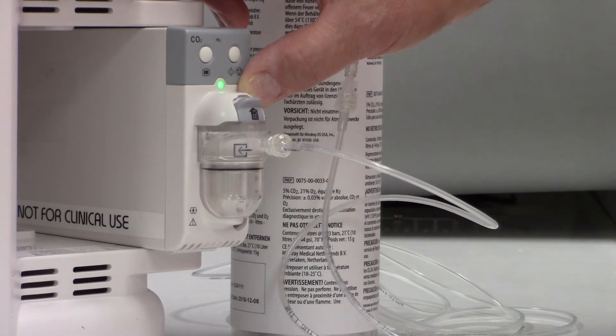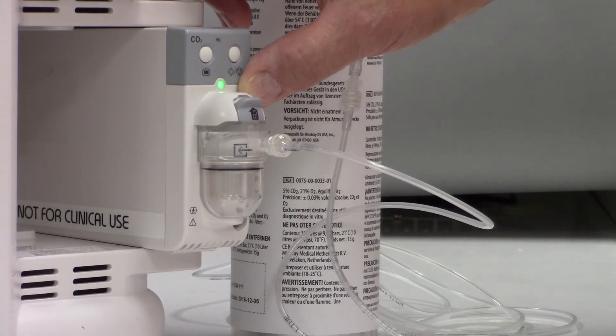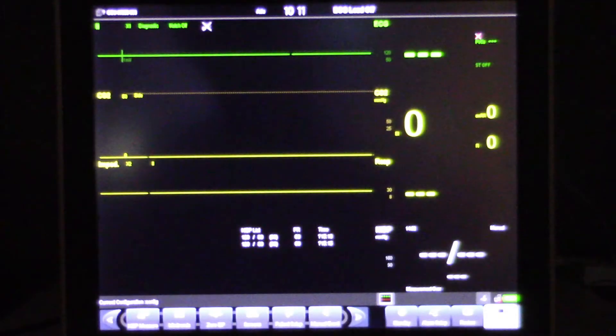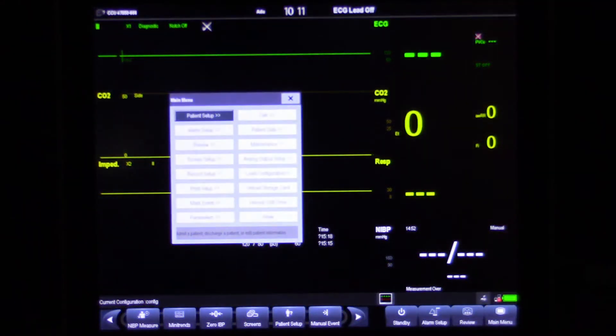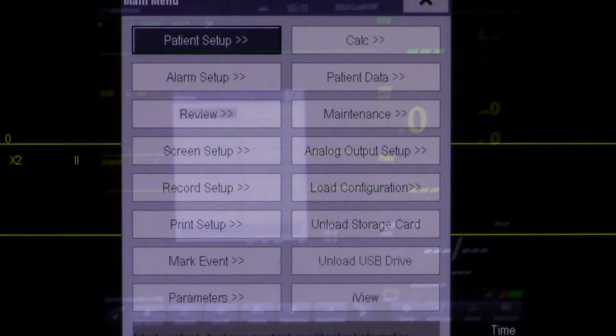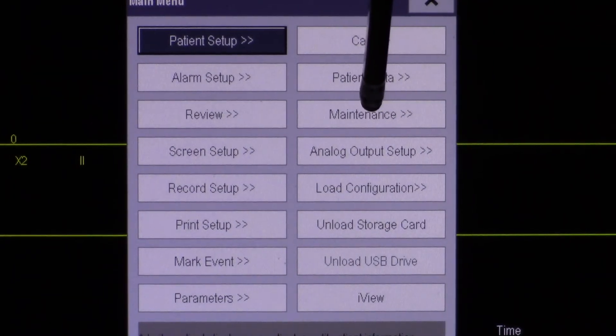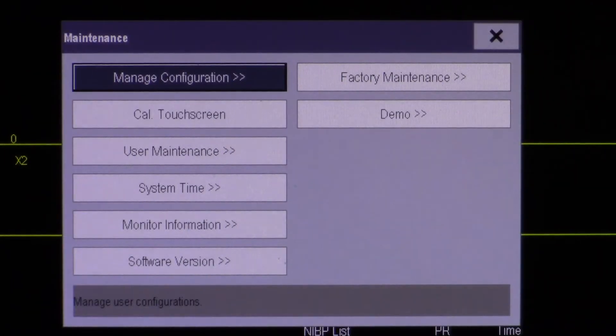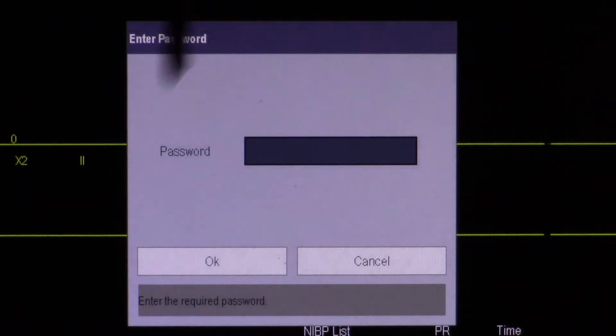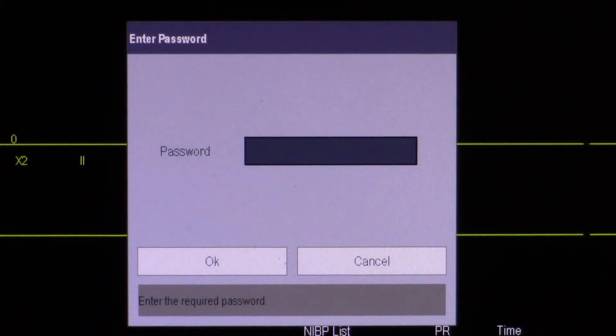From here, we will navigate through the user interface to start the calibration process. To begin, touch the main menu in the bottom right-hand corner of the screen. Select maintenance, user maintenance, touch the password field.